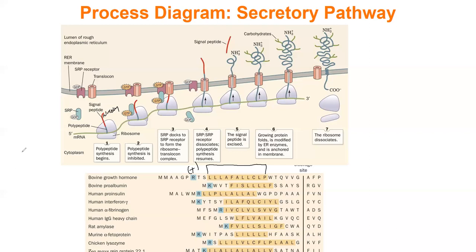Once that process is stopped, SRP, the nascent protein, the mRNA, and the ribosome all travel to a complex made of two proteins: the SRP receptor and the translocon. These two proteins are in the rough endoplasmic reticulum membrane. The SRP receptor binds SRP, and the N-terminus of the new peptide goes into the translocon. However, synthesis is currently halted because SRP is still bound to the ribosome.